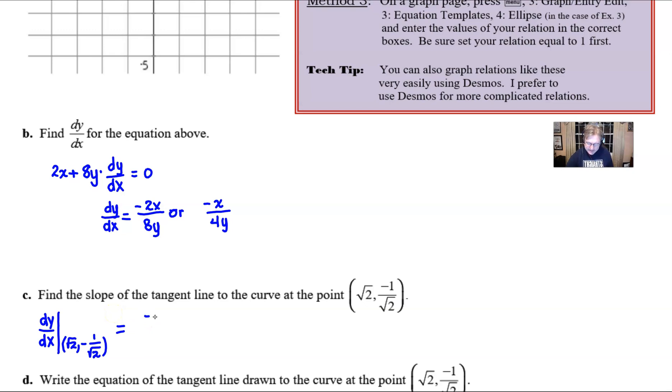So the numerator would be negative, and the x is replaced by square root of 2. And then for the denominator, we've got 4 multiplied by y, which is going to be replaced by negative 1 over square root of 2. And if we work on this a little bit, the numerator is going to still be negative square root of 2. Looks like the denominator would be negative 4 over the square root of 2. And I think we could probably simplify this just a little bit by multiplying by the reciprocal of the denominator. And that would give us something like this. Hopefully you see that the negative signs will cancel. Once the square root of 2's are multiplied together, you would get 2, and then 2 fourths is going to reduce to 1 half. And that would be the slope of the tangent line.